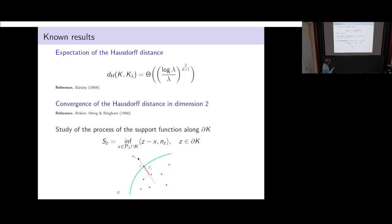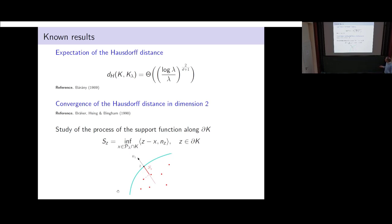They go along the boundary of K and look at the support function — a process indexed by the curve along the boundary of K. They consider the infimum over all Poisson points inside K of the scalar product with the outer unit normal vector at z, where z is a point on the boundary of K. They discretize this process and, with a purely one-dimensional method, they derive the convergence in distribution.